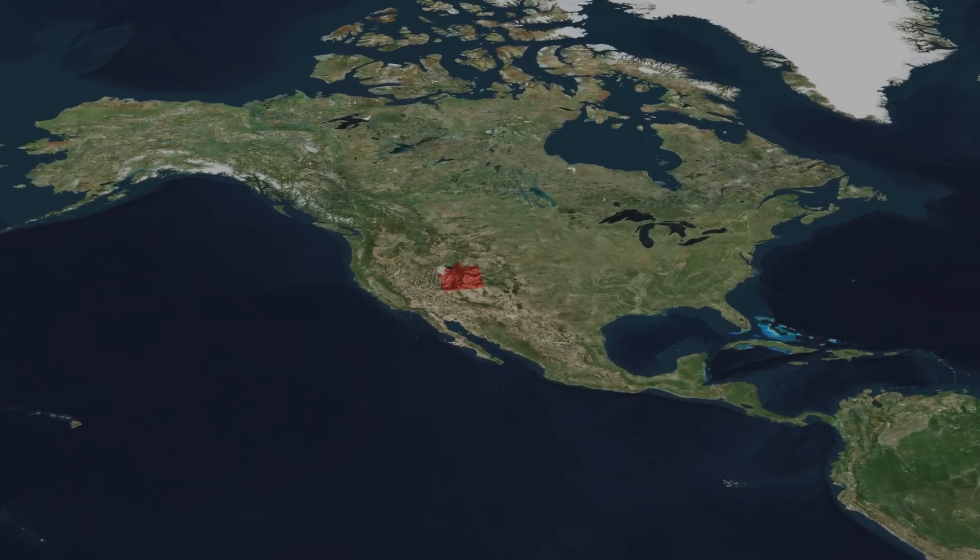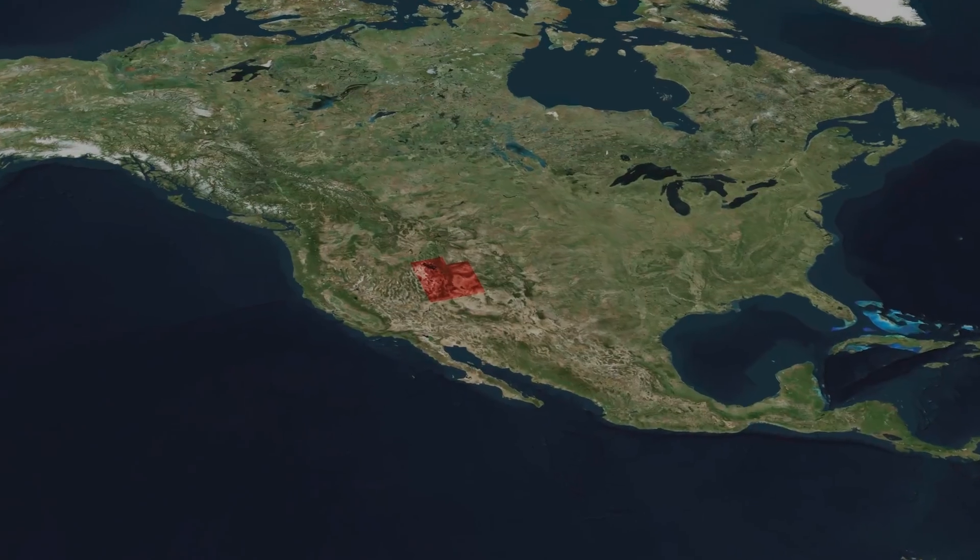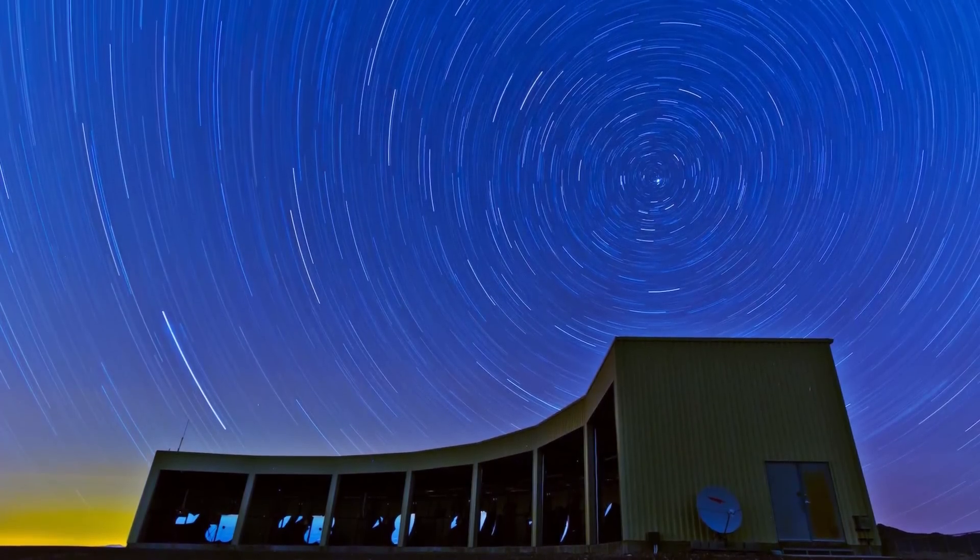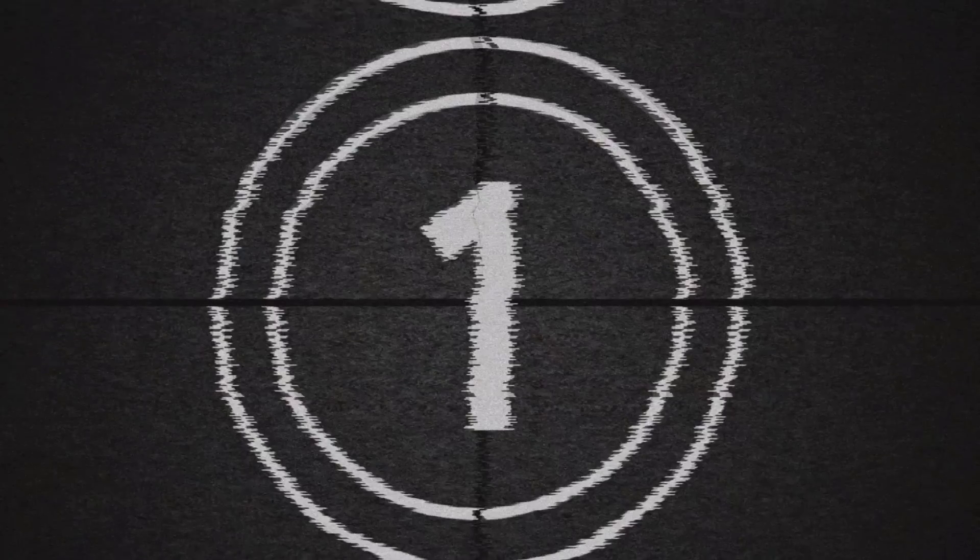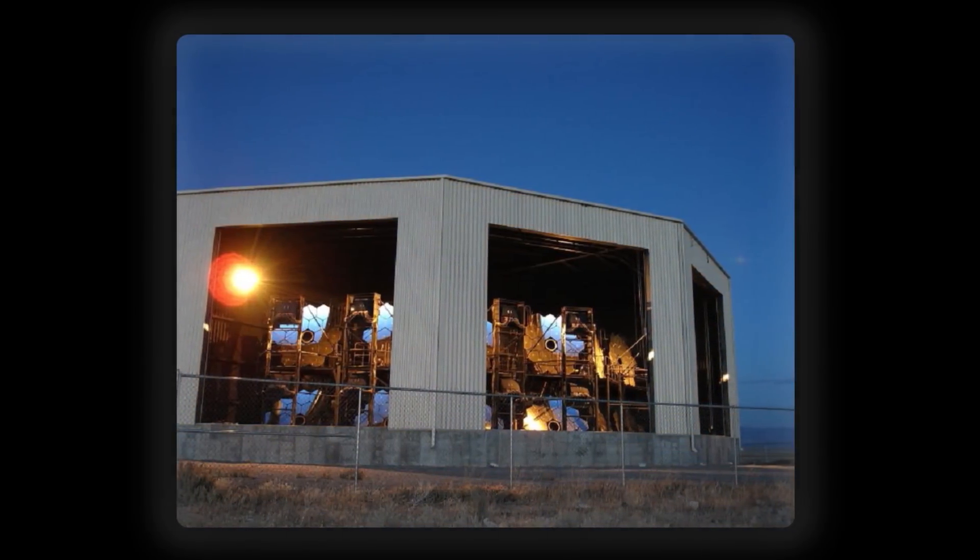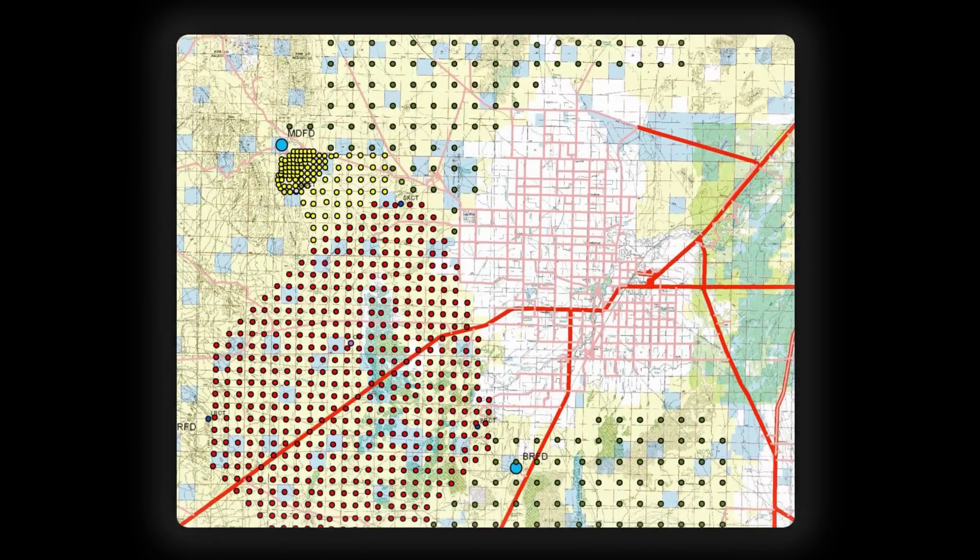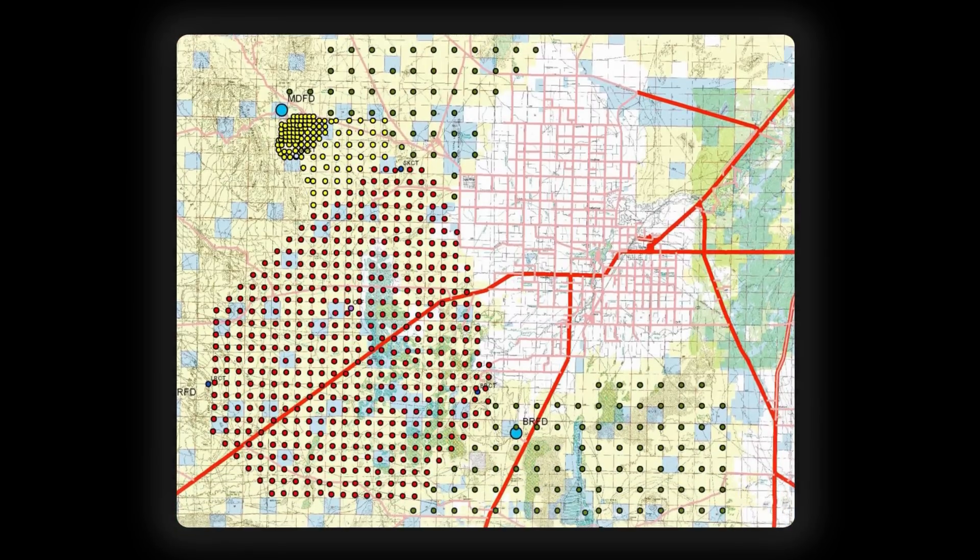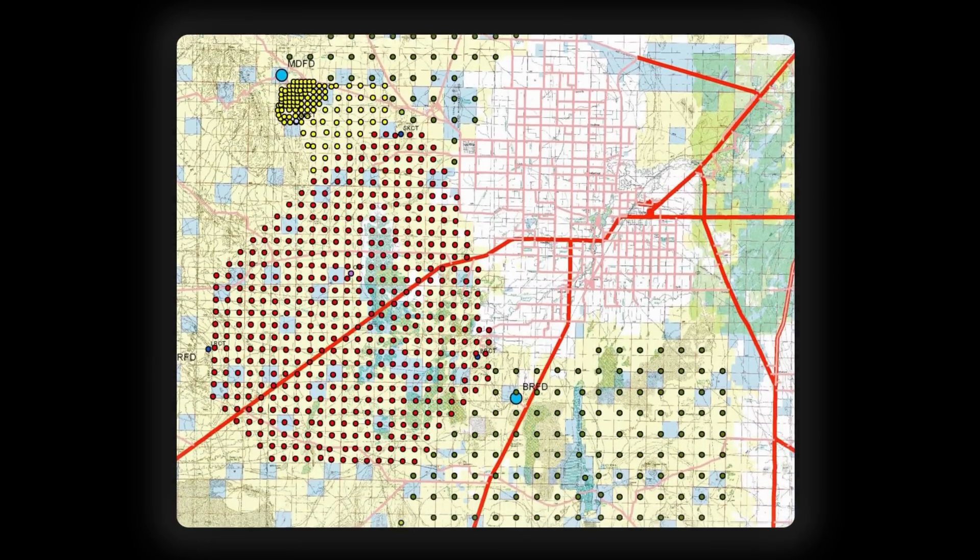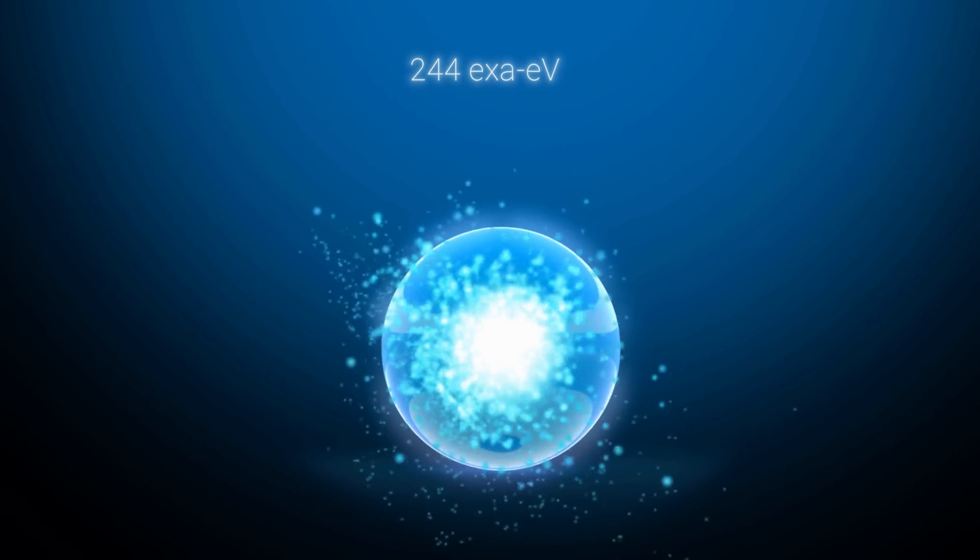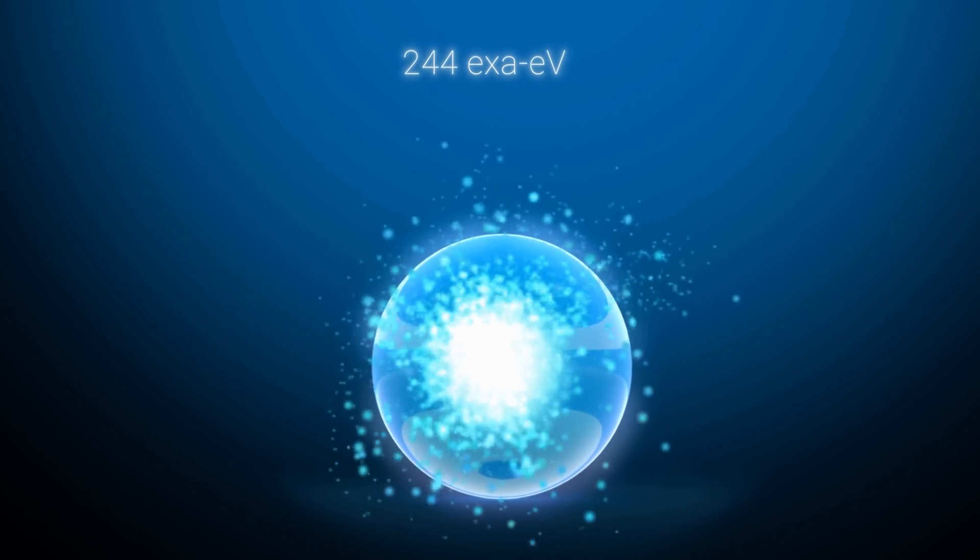The Telescope Array Experiment, located in the vast expanse of Utah, was the site for this monumental discovery. Its surface detector, a network of sophisticated sensors spread over many miles, detected a cosmic ray of unprecedented energy, the Amaterasu particle. With an energy of 244 exa-electron volts, this particle stood out not only for its tremendous power but also for its mysterious origin.